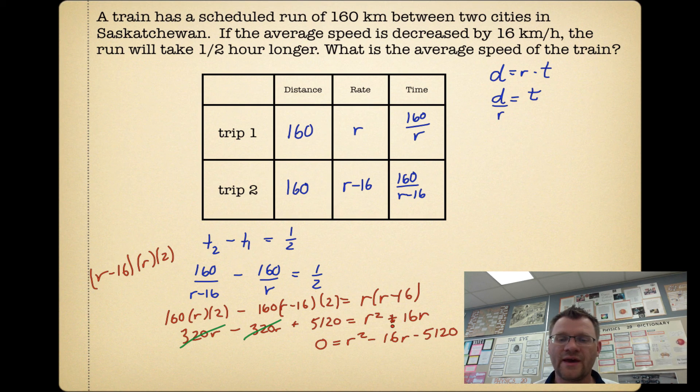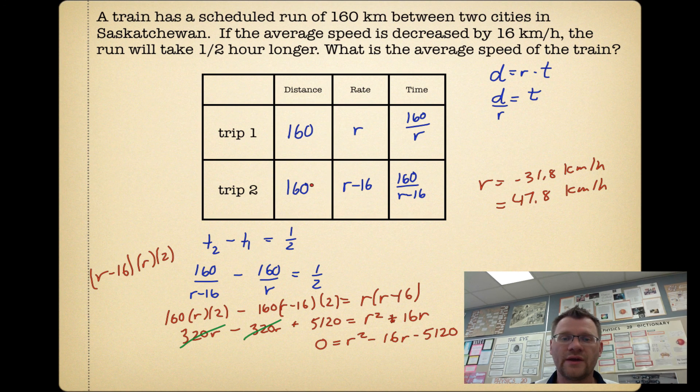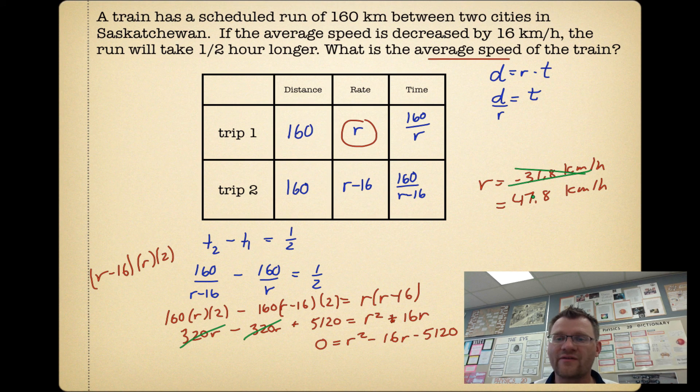Now I have a quadratic. I could try to factor that thing, or I'll just plug it into the quadratic formula. And when I plug it into the quadratic formula, I get two answers. I get r equaling negative 31.8 kilometers an hour, and the other one is 47.8 kilometers an hour. Now let's remember that we said r is our average speed. So we can't have an average speed that's negative 31.8 kilometers an hour, so that one is discarded, which means our answer is 47.8 kilometers an hour.